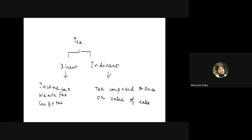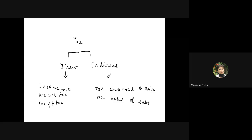In this class we will talk about taxation, and one group will prepare their project on subsidy. Subsidy is the reverse of taxation — in taxation, money is taken away; in subsidy, money is given as an incentive. For example, if a commodity costs 10 rupees per unit and there is a government subsidy of 2 rupees, you only need to pay 8 rupees.